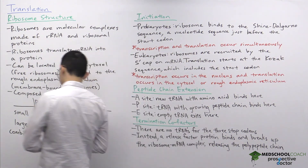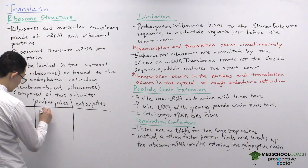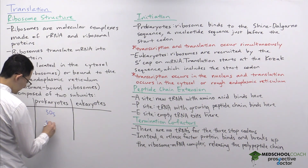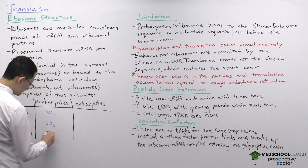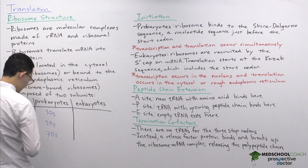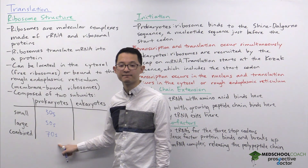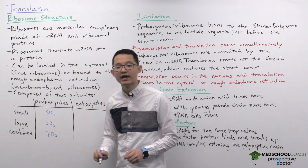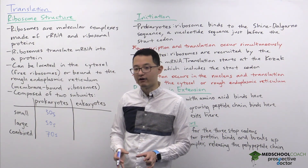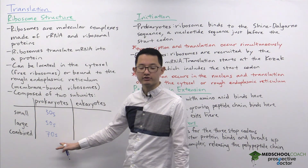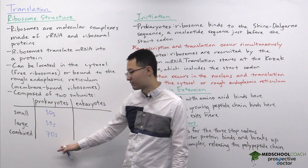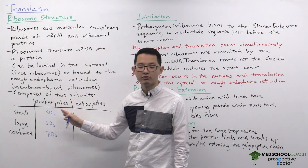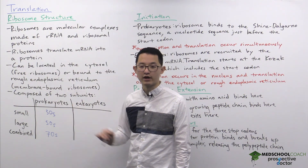For prokaryotes, you should know that the small subunit is 30S, the large subunit is 50S, and the combined ribosome is 70S. These numbers come from centrifugation. You should be able to associate the numbers 30S, 50S, and 70S with prokaryotic ribosomes.